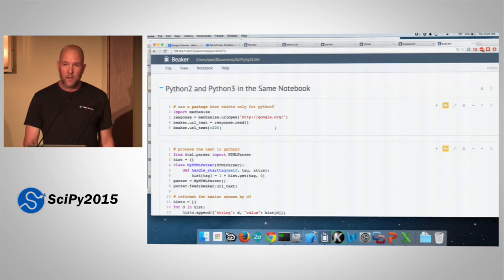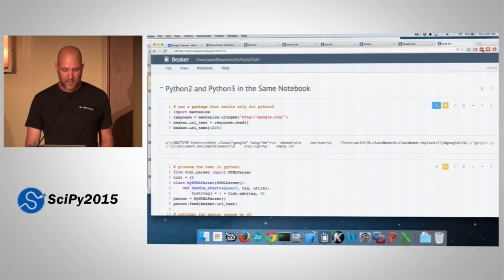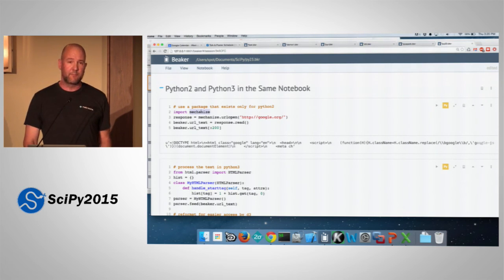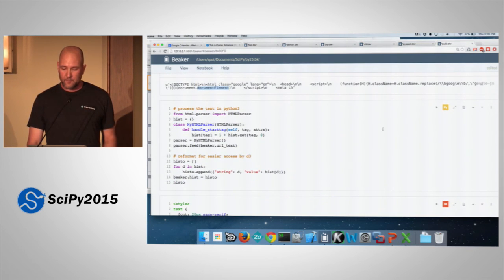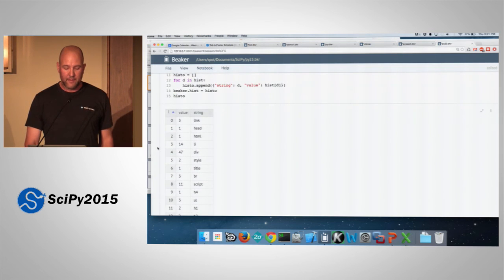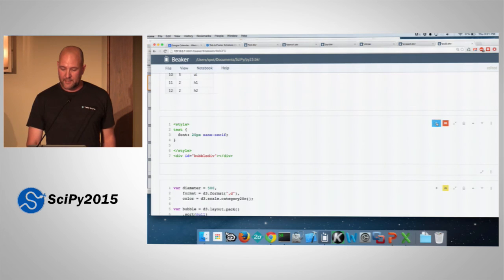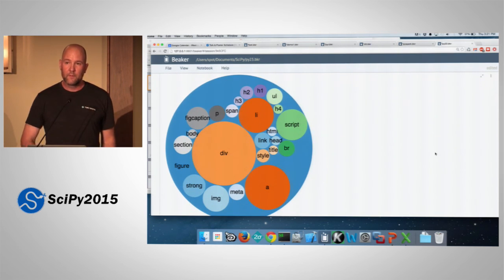And one final demo. A corollary of being able to run multiple languages is the ability to run Python 2 and Python 3, which are effectively different languages at the same time in the same notebook. And this comes in handy when you want to use a library that doesn't exist in the version of Python that you're using in the rest of your project. So here's an example where this mechanized library only exists in Python 2. So that's great for scraping the web. And here's pulling down the web page and assigning it to the beaker object and previewing some of the text that's there. And then in Python 3, I'm going to process the contents of that web page and then visualize it again with D3. It's as simple as that.